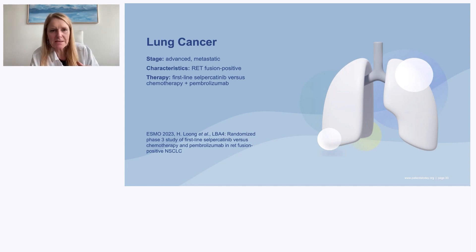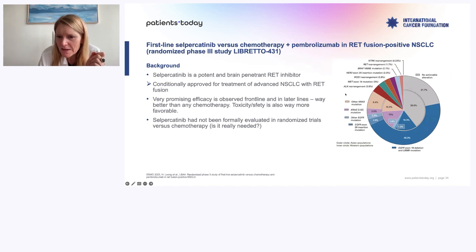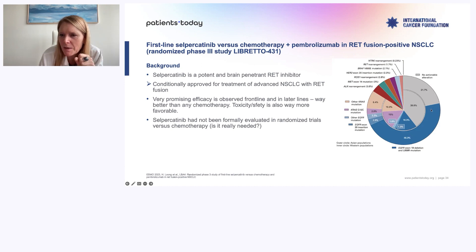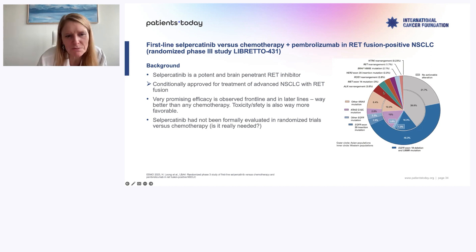This RET fusion — this is a pie we have now. The outer circle shows mutations found in the Asian population, the inner circle in the Western population. You can see the RET driver, taken at 1.7%. It can even be lower — a very small slice of this pie.